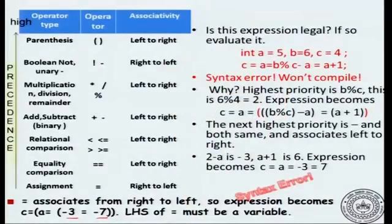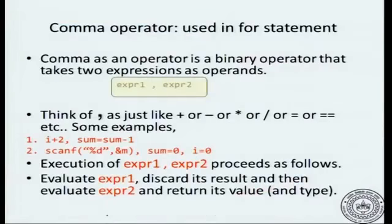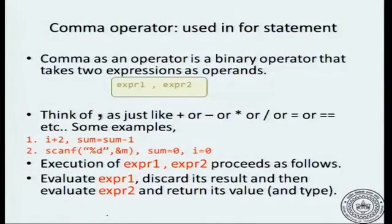So there is a syntax error. We will conclude the discussion on operations with one more operation that is quite common in C: the comma operator. This is not very common in mathematics, but let us discuss what it means in C. We have two expressions — expression one and expression two — separated by a comma. Think of the comma as an operation just like any other operation like plus or minus.